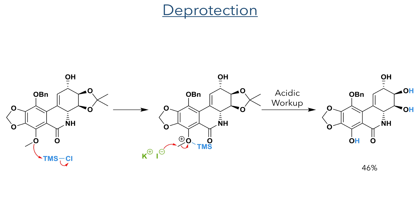To complete the synthesis, a simple deprotection was carried out using TMS chloride and potassium iodide in anhydrous acetonitrile. The TMS group can bond to the ether making it more electrophilic, while the iodide acts as a nucleophile to displace the methyl group. This was then quenched using 6 M hydrochloric acid, which served to hydrolyze the acetal and complete the synthesis of the target molecule in 46% yield.